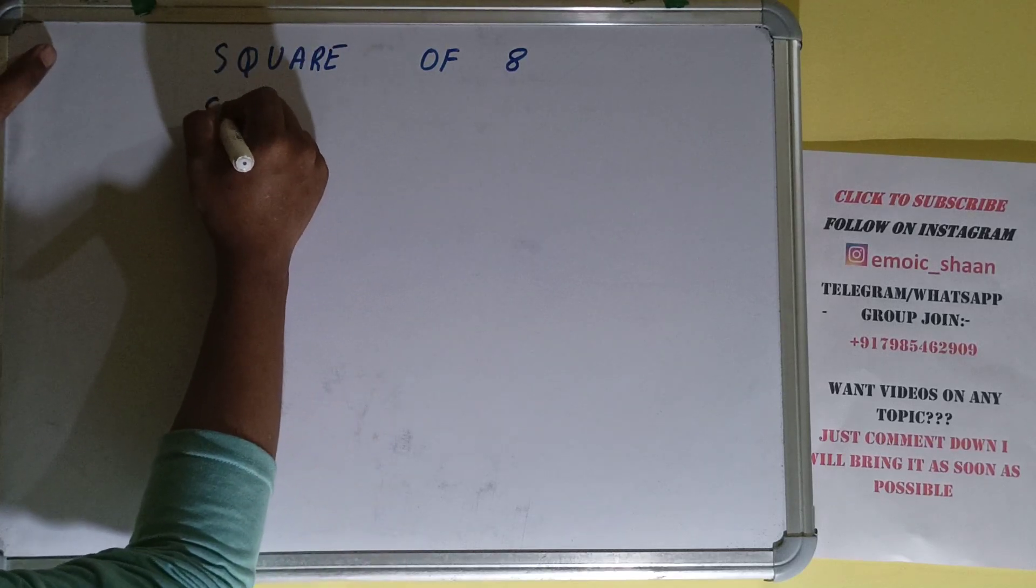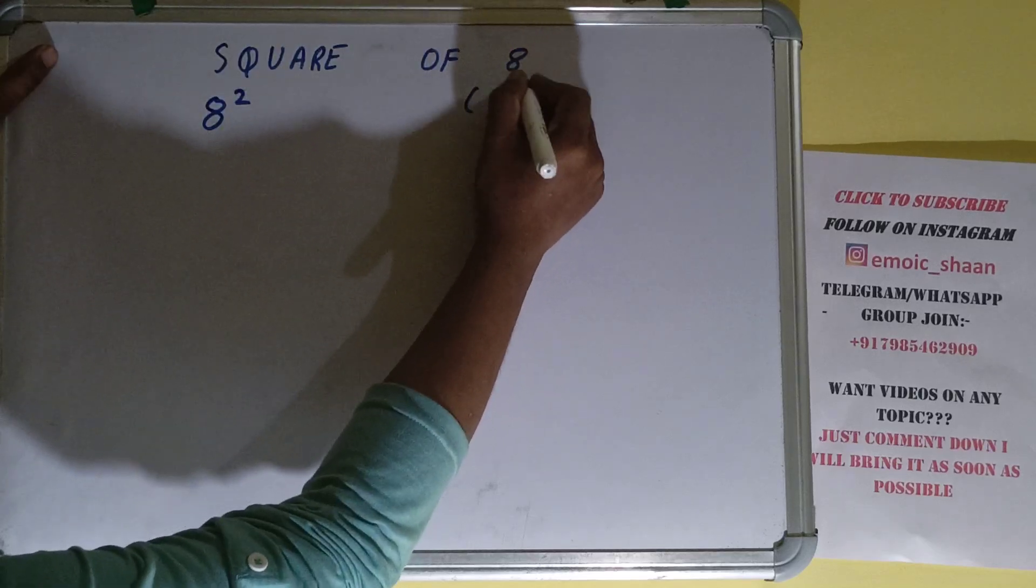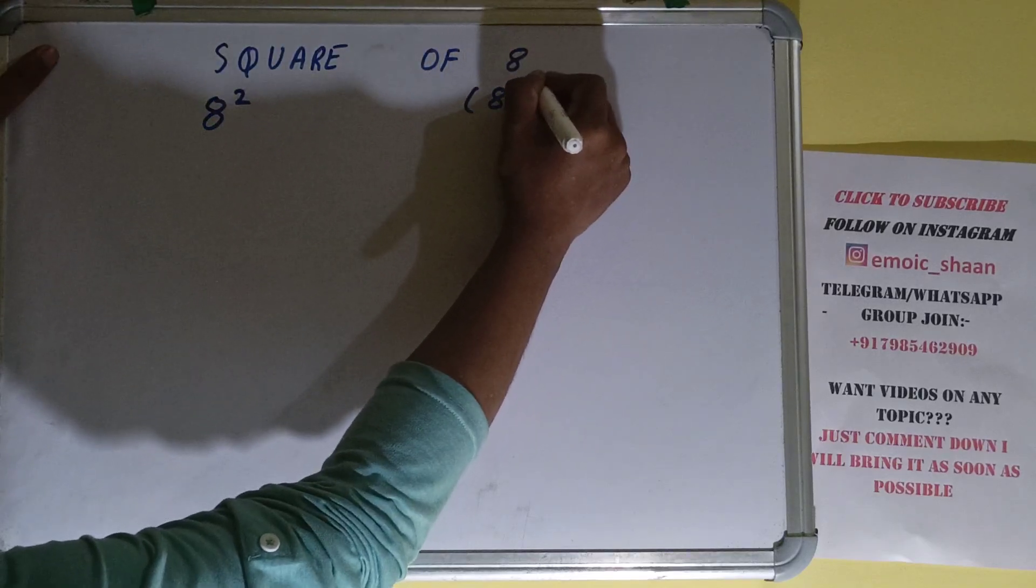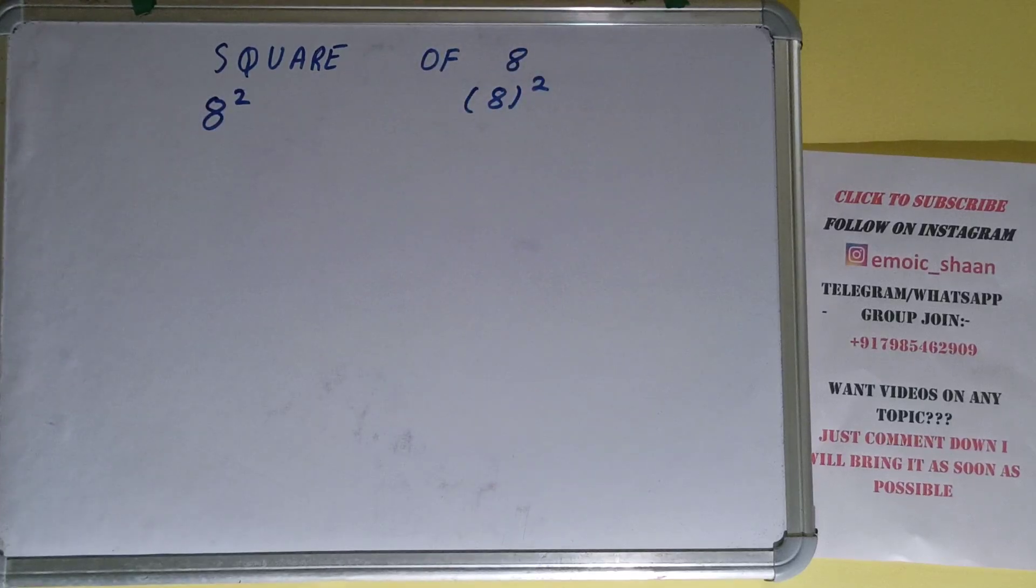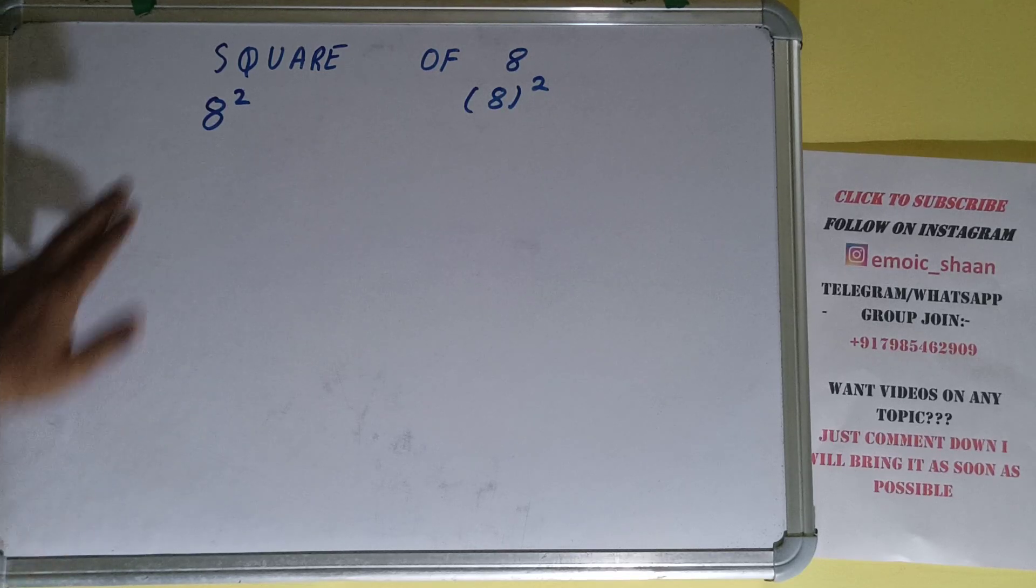Or you can write it like this also: 8 in bracket and outside power 2. It basically means you need to find out the square of 8. All are the same, remember that.